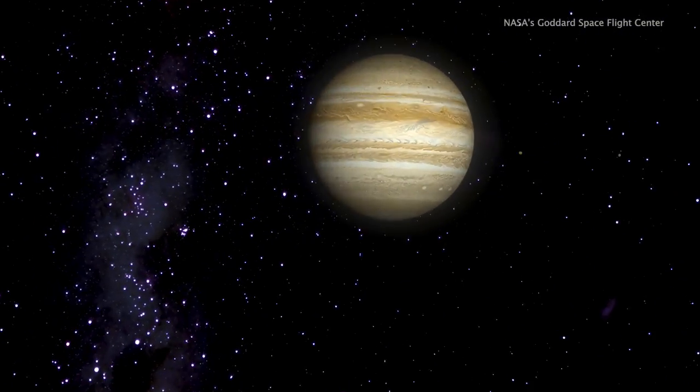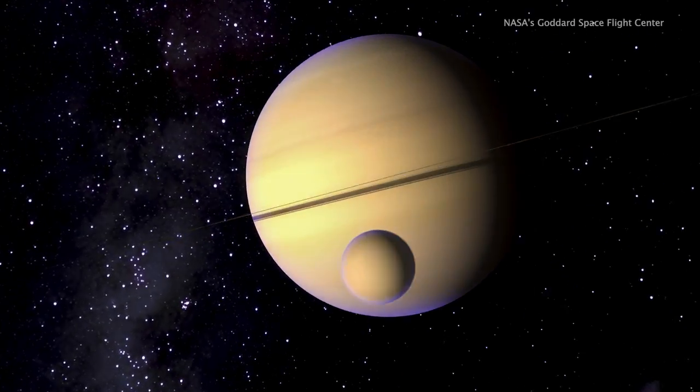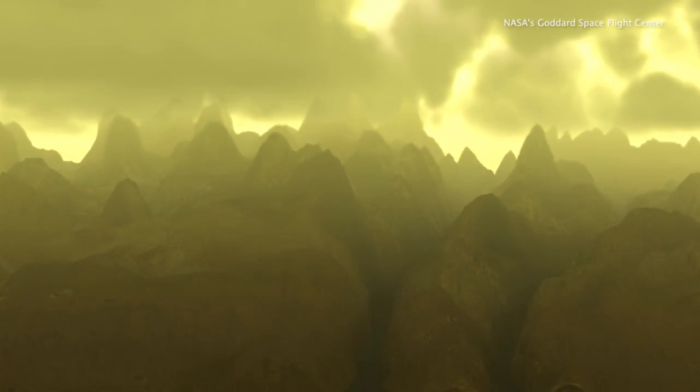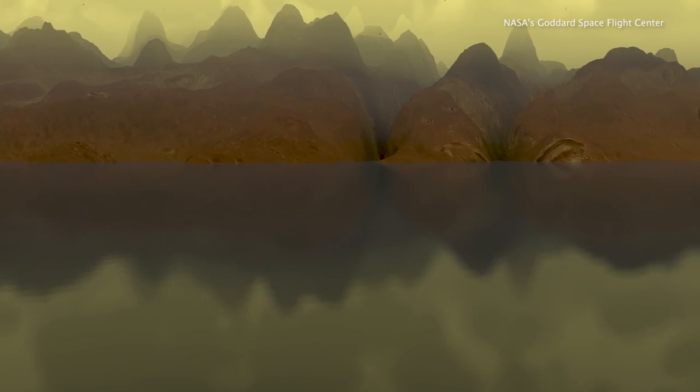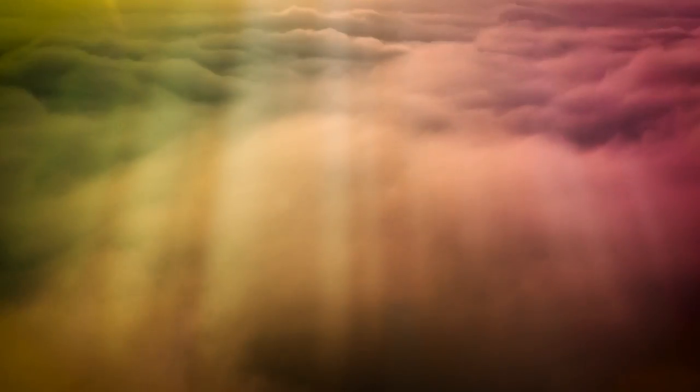People frequently ask me why Titan is so amazing, and my usual go-to answer is, what isn't amazing about Titan? There's extensive dune fields, lakes and seas made out of methane and ethane. It's the only place other than Earth in the solar system where it rains, which also means it's the only place other than Earth where right now you might be able to see a rainbow.